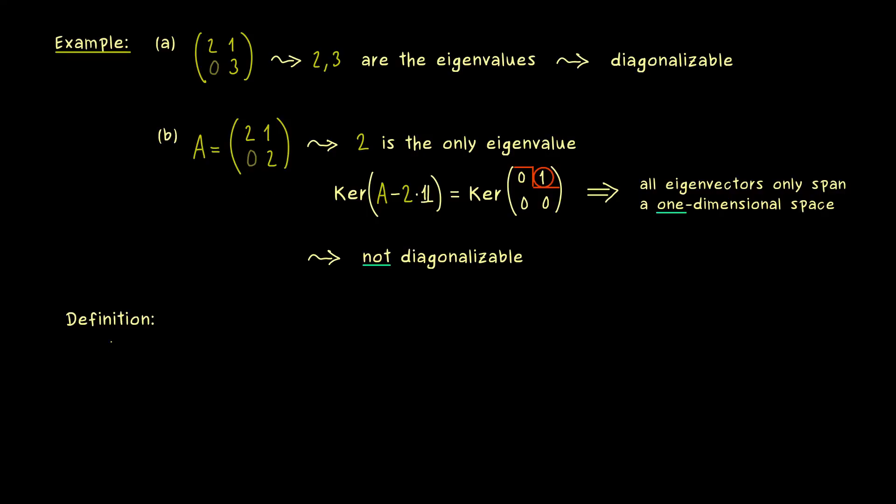Of course a 2 times 2 matrix is really simple, so let's write down the general definition of the Jordan Normal Form. And please never forget, here we always talk about square matrices over the complex numbers. And now we say that such a matrix is a Jordan Normal Form if it has a very special structure.